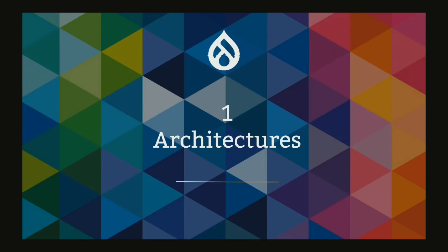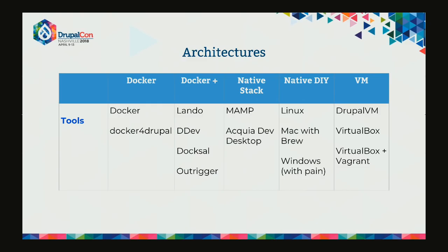The whole talk is going to center around the idea that there are different architectures - different categories of local development experience. We'll go through all other questions with the architecture in mind. There are really five architectures: Docker - straight Docker with Docker Compose files; Docker Plus - something awesome built on top of Docker, like Lando, DDEV, Doxel, and Outrigger; and then a native stack.